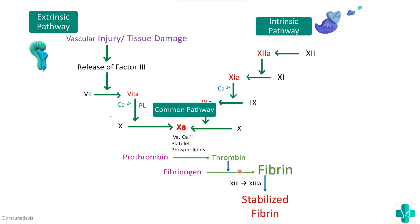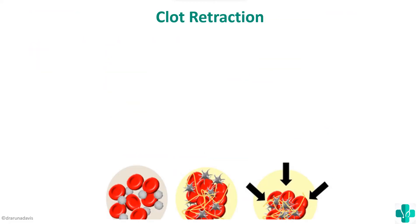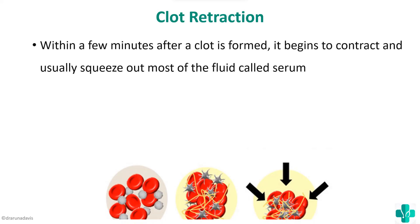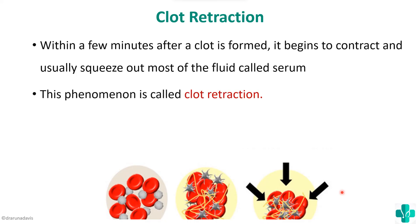Clot formation does not stop at fibrin stabilization — there is one more stage called clot retraction. Within a few minutes after a clot is formed, it begins to contract and squeeze out most of the fluid, called serum. This phenomenon is clot retraction and is usually the function of platelets. When answering a question on the mechanism of coagulation, we should write about temporary hemostasis, definitive hemostasis, and complete the answer with clot retraction.